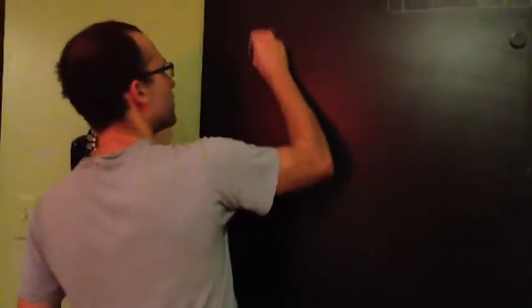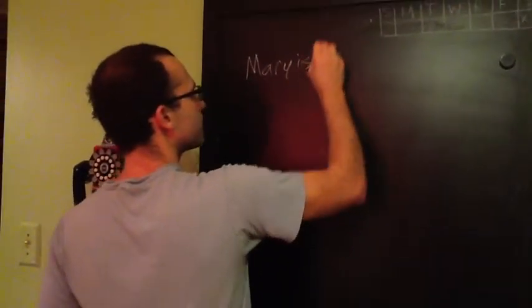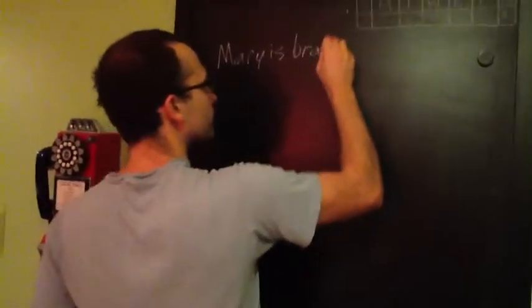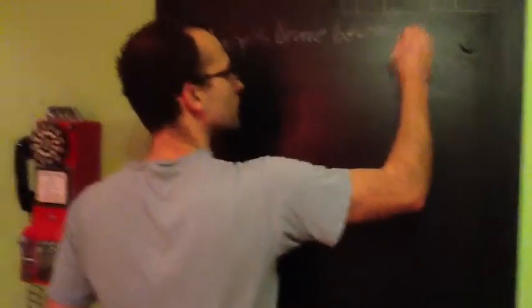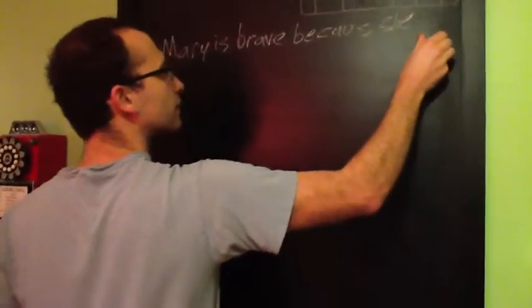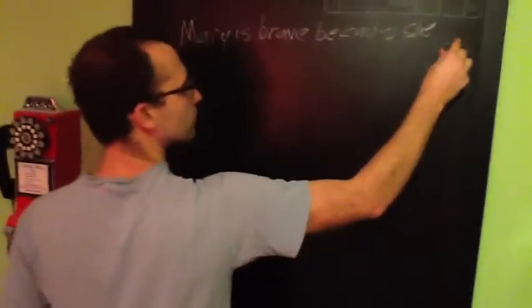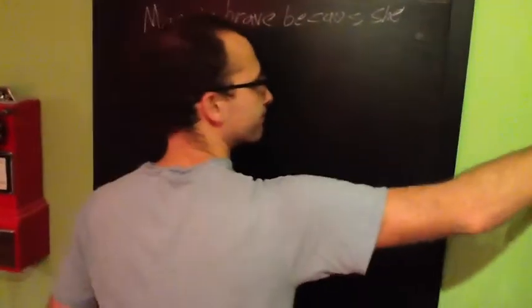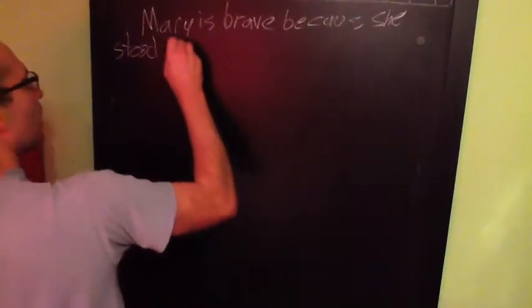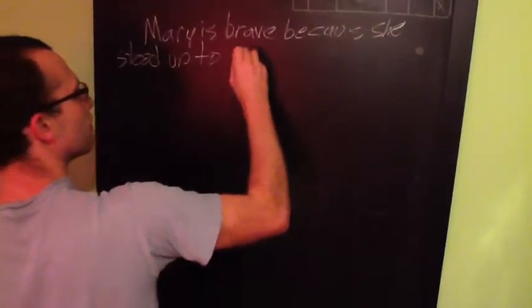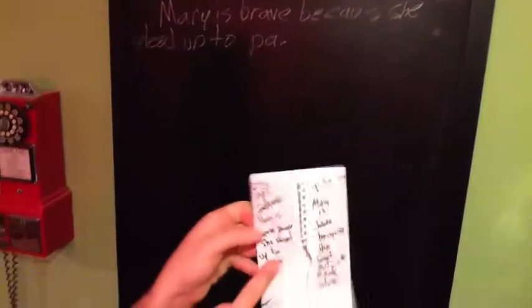Here's your one example. So, topic sentence — you indent. Writing: Mary is brave because she stood up to Pa. Alright? That is my topic sentence.